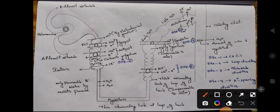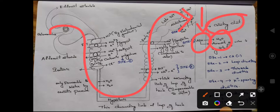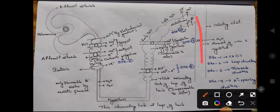Finally, in the collecting duct, the remaining fluid is excreted. Here, the anti-diuretic hormone (ADH) plays a role — diuretics increase urine flow, but ADH does the opposite. During dehydration conditions, ADH is released as a protective action to reabsorb water molecules from the fluid in the collecting duct back into the body. The remaining fluid is then excreted as urine.